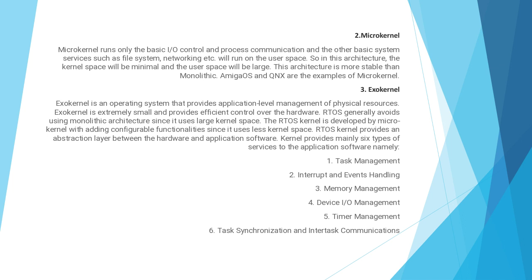A micro kernel runs only basic IO control and process communication in kernel space, while other basic system services such as file system and networking run in user space. In this architecture, the kernel space is minimal and user space is large. This architecture is more stable than monolithic. Amiga OS and QNX are examples of micro kernels.